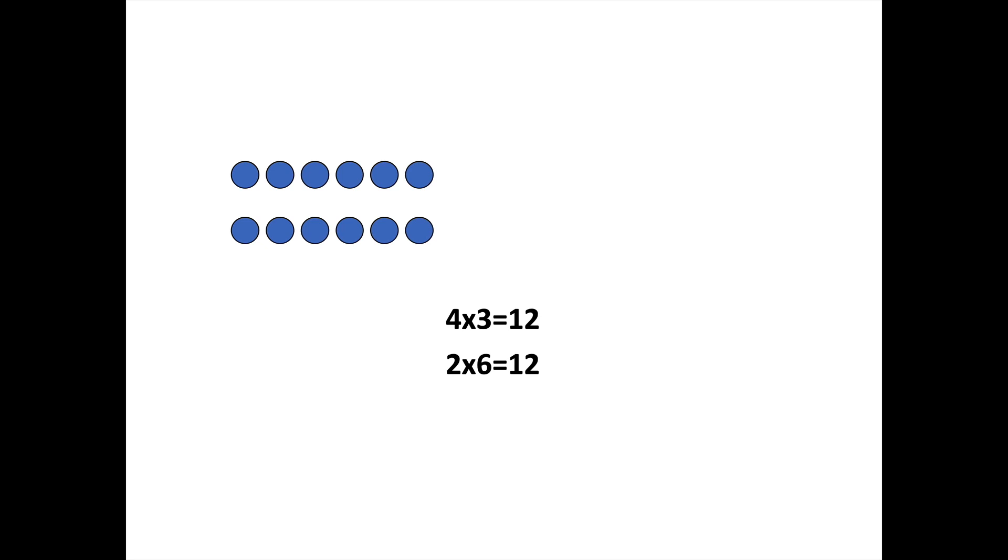Do we still have 12 dots? Yes, we do. They're just arranged a little bit differently. Let's take the number of rows and divide it in half again. So now we have one row, but we have 12 dots. So we doubled the amount in each row, but we halved the number of rows. Now we have 1 times 12.